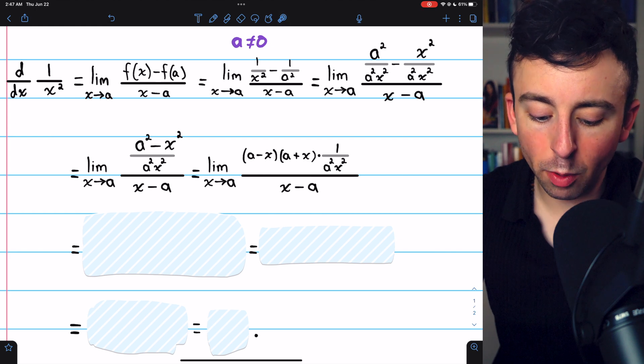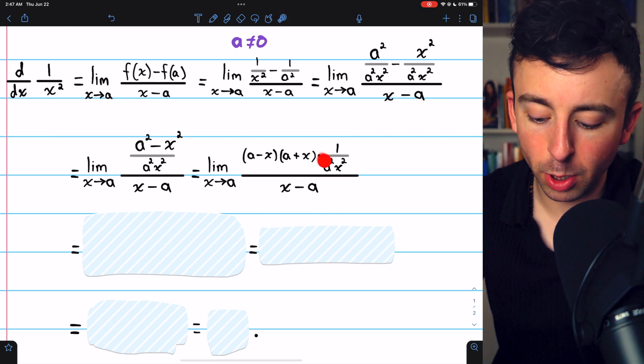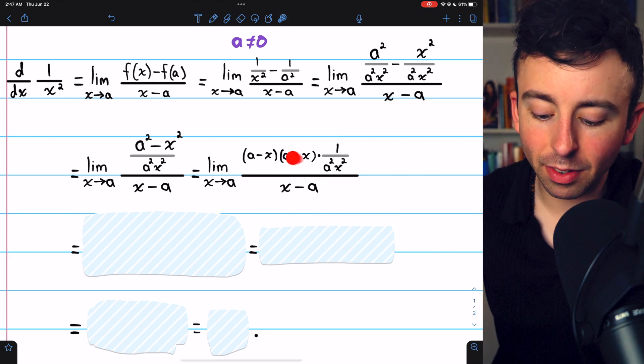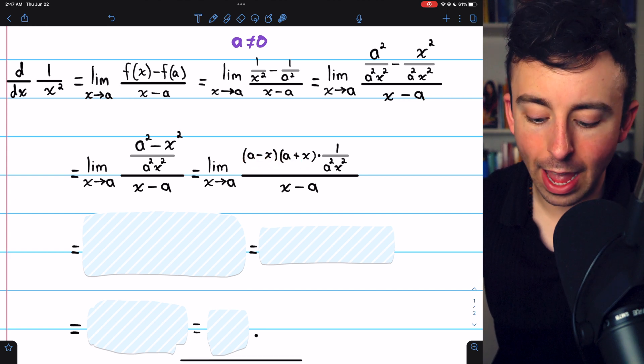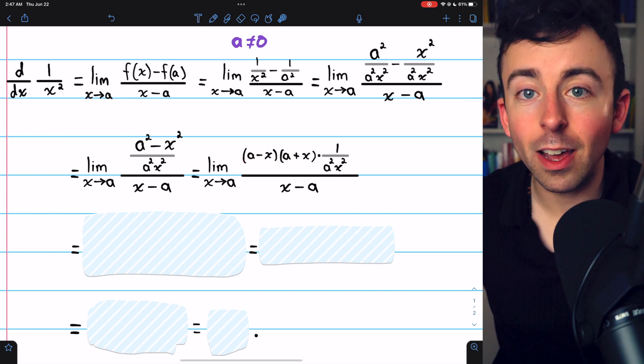We have 1 over a squared x squared. We're just pulling that out. And that leaves our difference of squares: a minus x times a plus x.